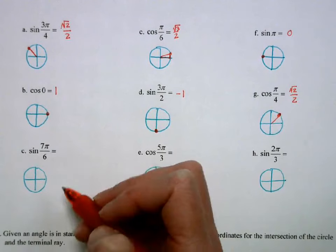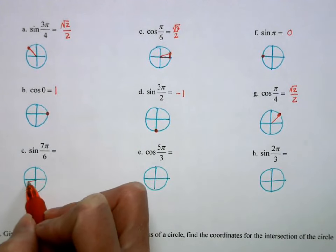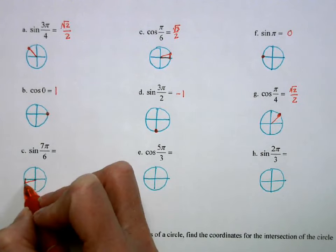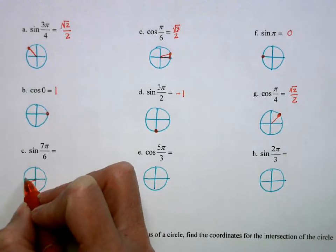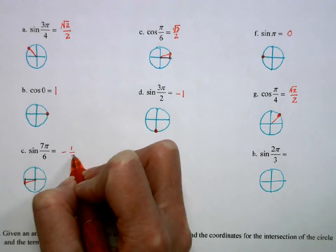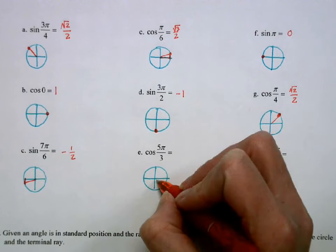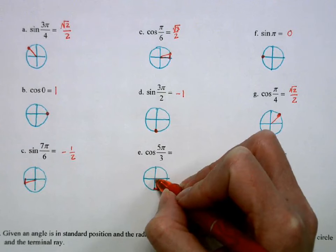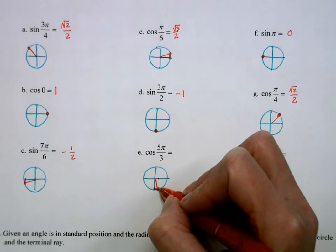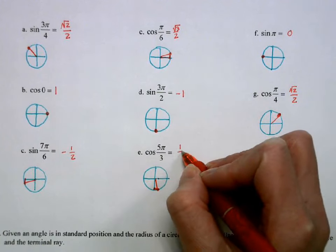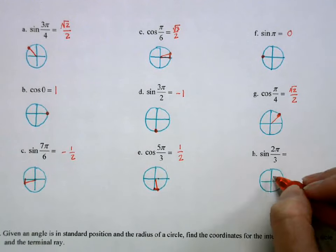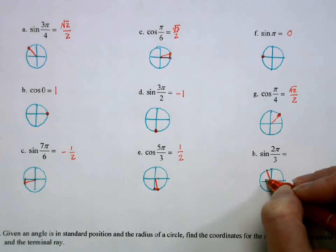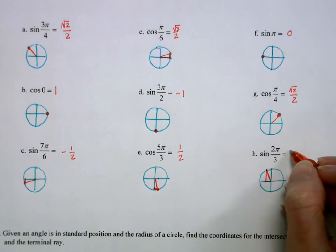For sin(7π/6): that's closest to the x-axis in the third quadrant — short y, negative — so negative 1/2. For cos(5π/3): that's closer to the y-axis with short x, positive, so 1/2. For sin(2π/3): closest to the y-axis, long y, positive — so √3/2.